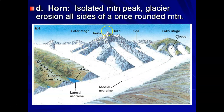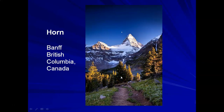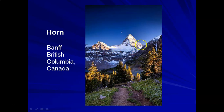A horn is an isolated mountain peak where glacial erosion has occurred on all sides of what was once a rounded mountain, totally transforming that rounded mountain peak into a rocky peak called a horn. There are many horns in the Alps of Europe — most mountain peaks you'd visit in your travels are horns. The most famous horn of all is the Matterhorn near Zermatt in Switzerland. If you go to Interlaken, there's the Schilthorn and many others. There are also tremendous horns in the Himalayas. Banff in British Columbia has many glacial features, including another nice example of a horn.